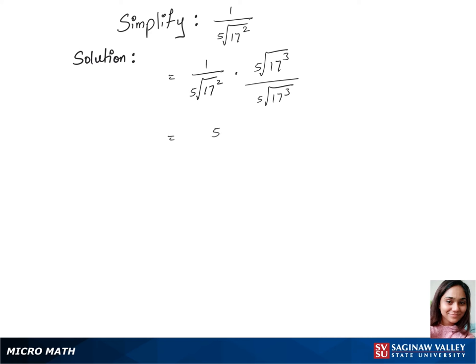So that's the 5th root of 17 cubed over the 5th root of 17 to the power 2 plus 3, which is 5. Now let's write the 5th root of 17 to the power 3, which is 4913, over the 5th root of 17 to the power 5.